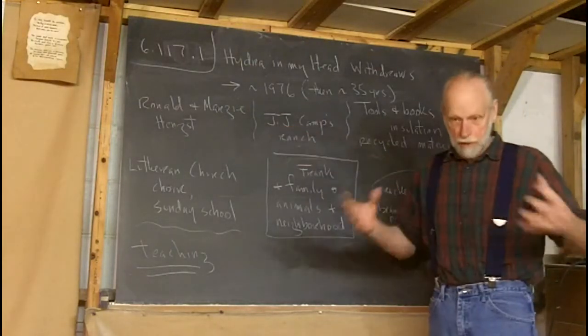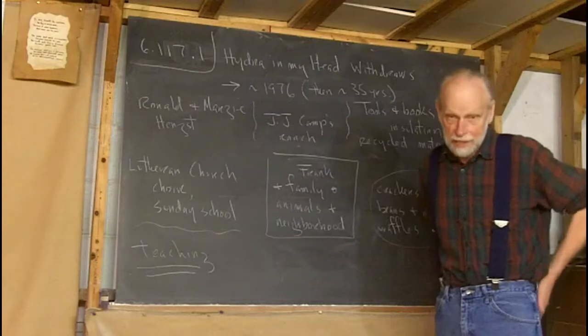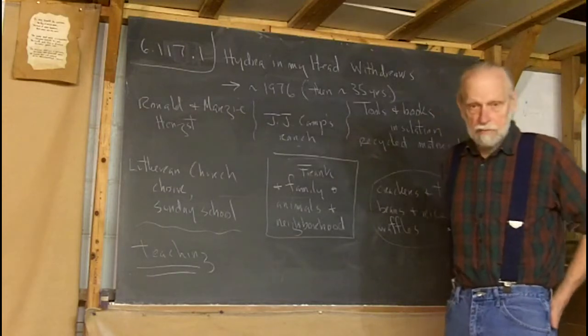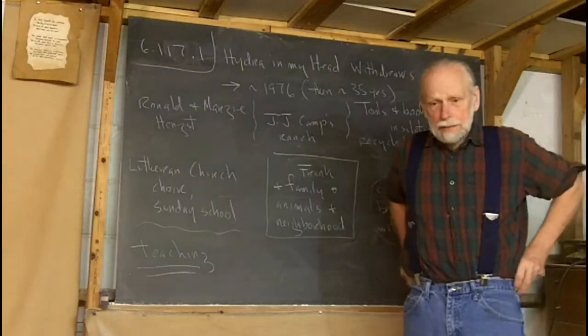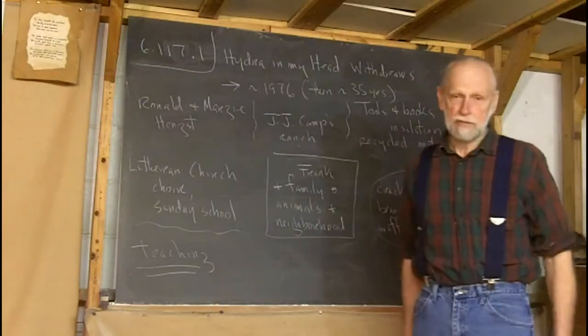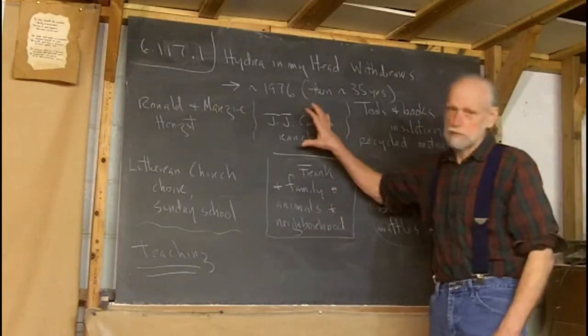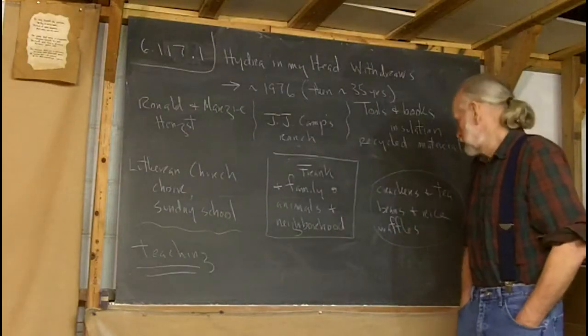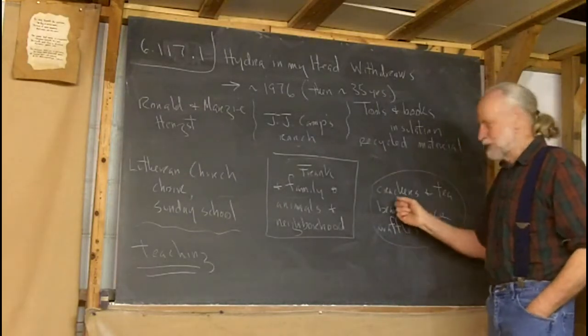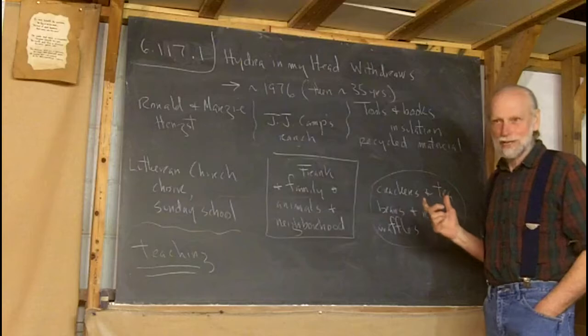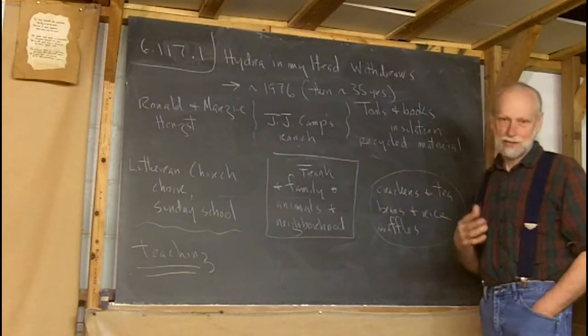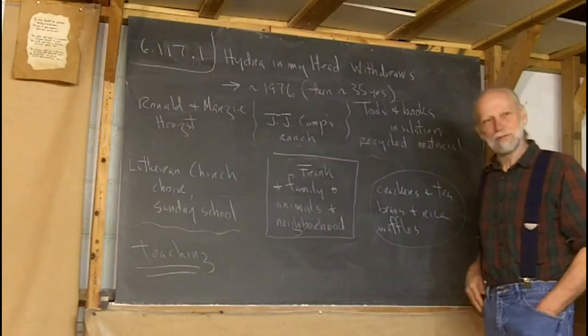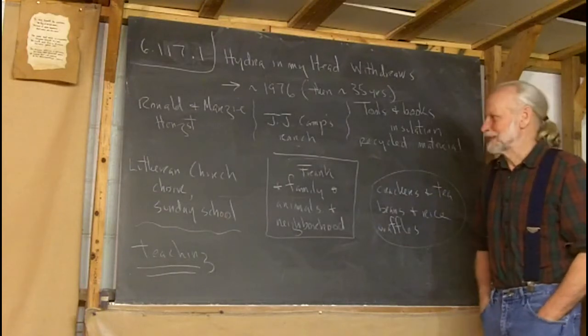J.J. Camp's ranch had been basically neglected for 11 years, I think, since he died. And if you looked at a fence, it fell down. I mean, there was so much stuff to do, which I did. I was living at that time, basically, I think back of it, crackers and tea, saltines, beans and rice, which I'd learned to basically live on in Brazil, and waffles. That was kind of my diet at the time.